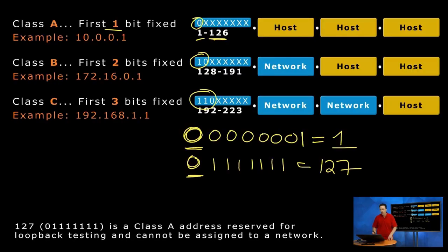So in reality, our Class A goes from one to 126.